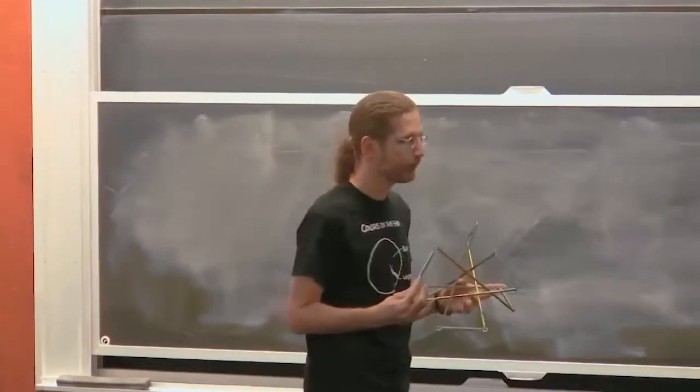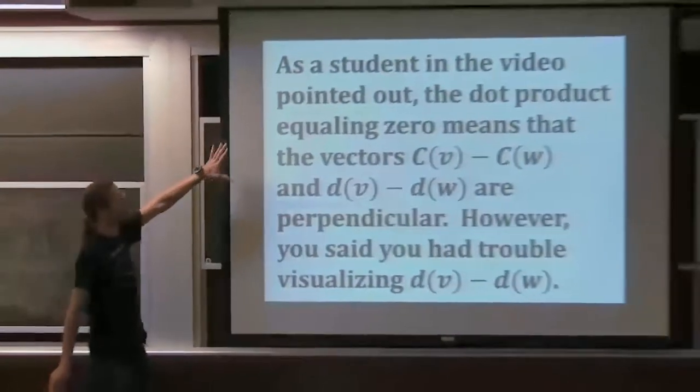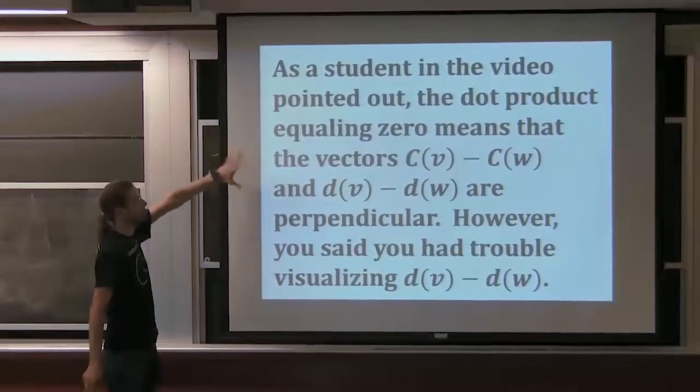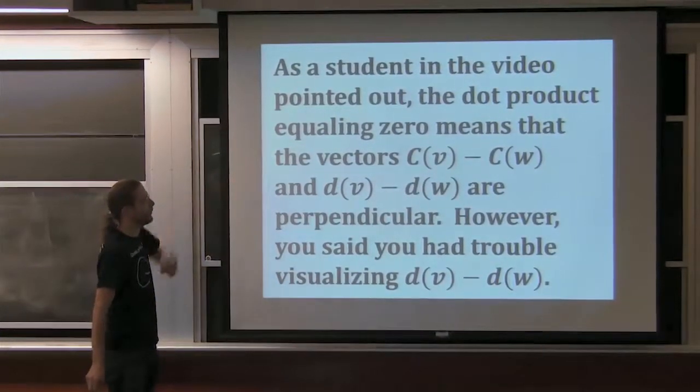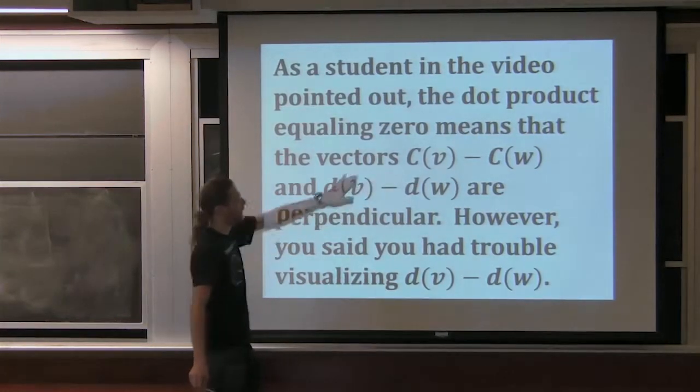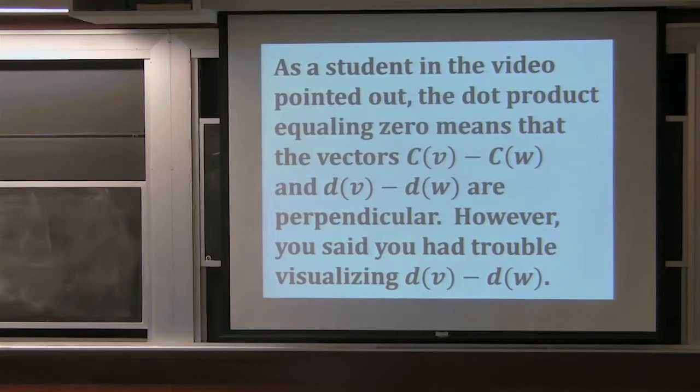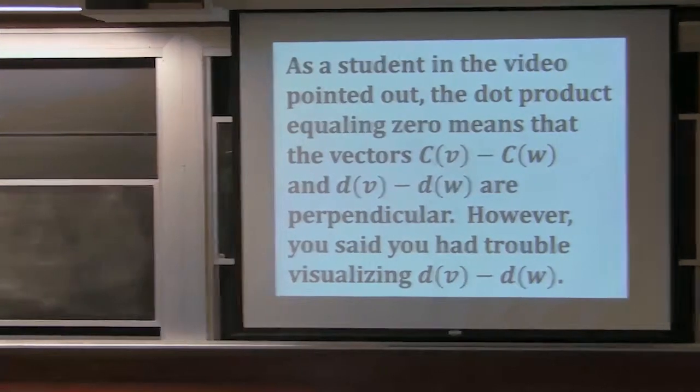So just a couple questions about tensegrities. First is about infinitesimal rigidity in general. This is sort of extra bonus. I talked about one reason why this dot product condition is the right thing, which is based on projection. But there are other ways to think about it.